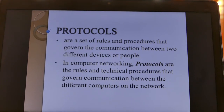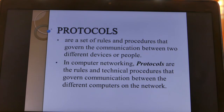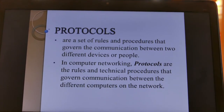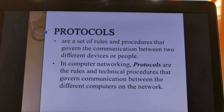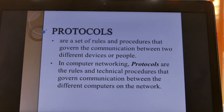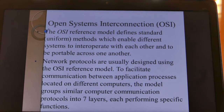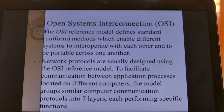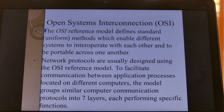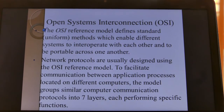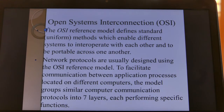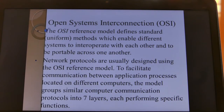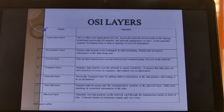We have protocols, which are a set of rules and procedures that govern communication between two different devices and computers on a network. Under these we have OSI layers. OSI is a standard, or uniform method, used to enable different systems to inter-operate with each other and to be portable across one another. There are seven layers, each with its own function.